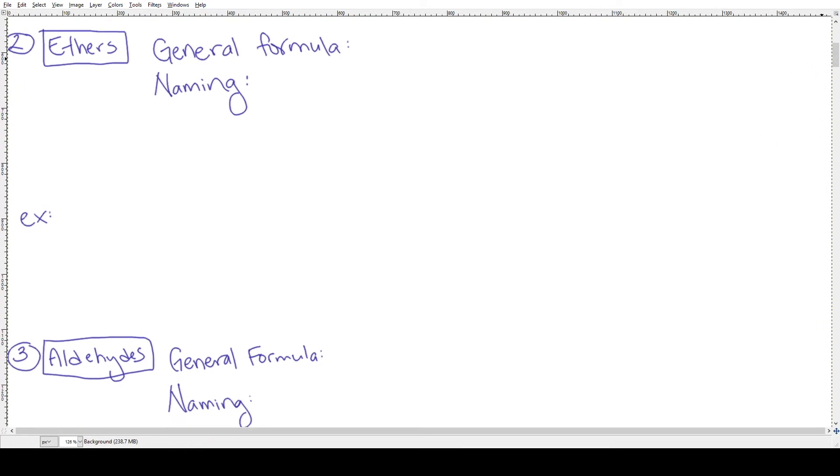Okay, so ethers. So these guys are very similar. For them, the general formula also includes oxygen. You're going to have R-O-R', where R' can be the same thing as R, but it cannot be a hydrogen. In other words, it does not work if you have that. You must have carbon chains on either side of the oxygen. The naming for this one is pretty simple. You're going to have a group on either side of that oxygen. So the naming is going to be the names of the two groups plus the word ether at the end.